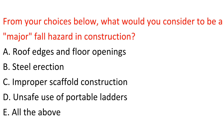Question: From your choices below, what would you consider to be a major fall hazard in construction? A. Roof edges and floor openings. B. Steel erection. C. Improper scaffold construction. D. Unsafe use of portable ladders. E. All the above. Answer: E. All the above.